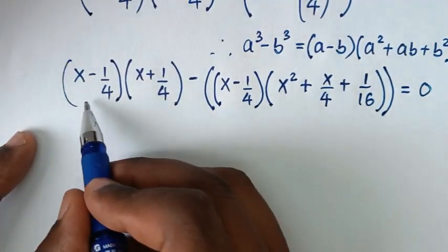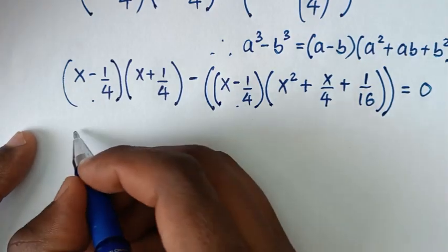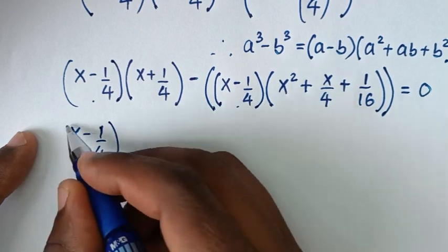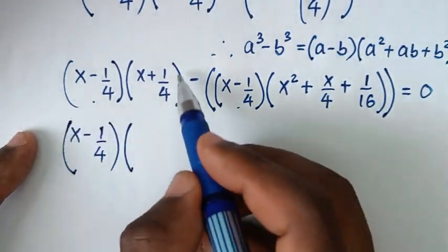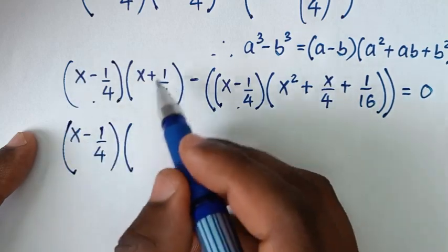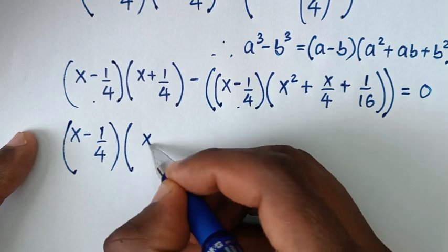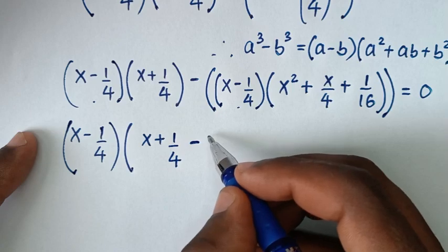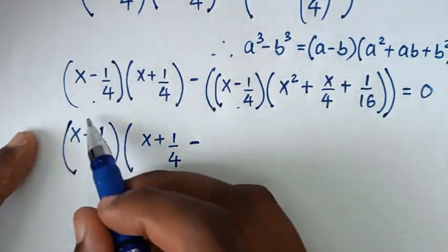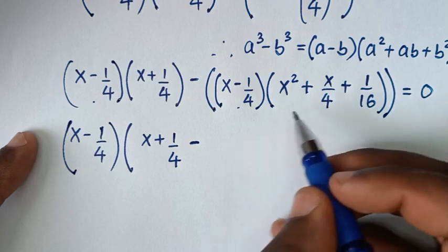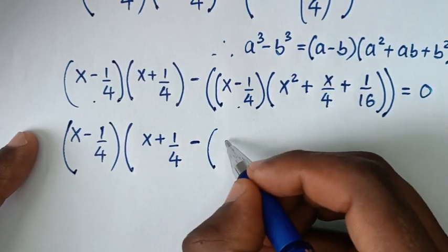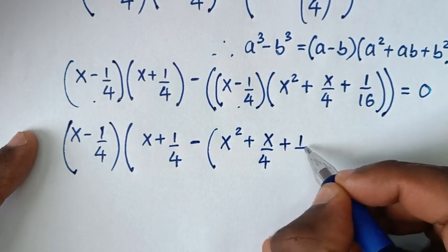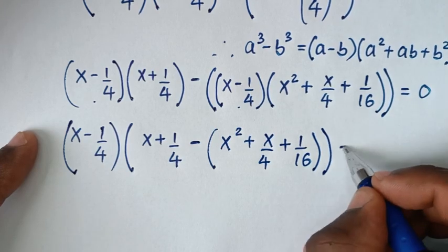Then in the next step, x minus 1/4 is common across both terms, so we take x minus 1/4 out as a common factor. Dividing through by (x minus 1/4) leaves: (x + 1/4) minus (x squared plus x over 4 plus 1 over 16), equal to 0.